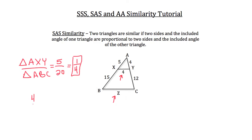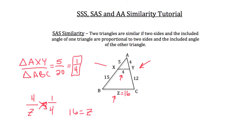Following our proportion written as AXY over ABC: the side of triangle AXY has a length of 4 and the missing side of triangle ABC has a length of Z. Setting that equal to the proportion of 1 over 4 and using the cross product property: 4 times 4 is 16, equal to 1 times Z, so Z equals 16. This missing length could only be solved because we established similarity using Side-Angle-Side — both triangles shared angle A as the included angle between those two corresponding sides.